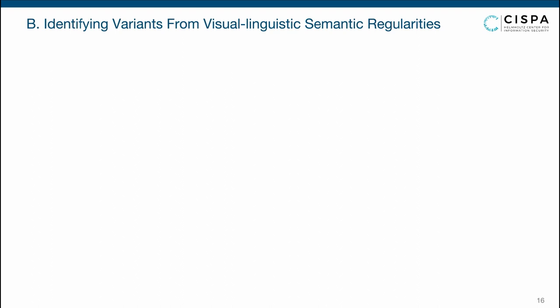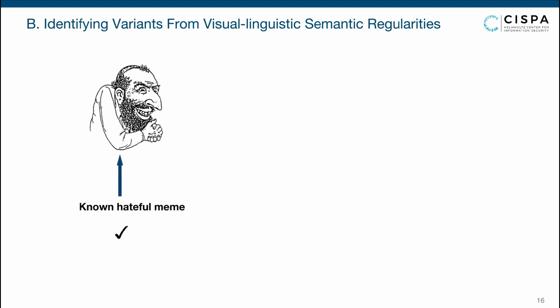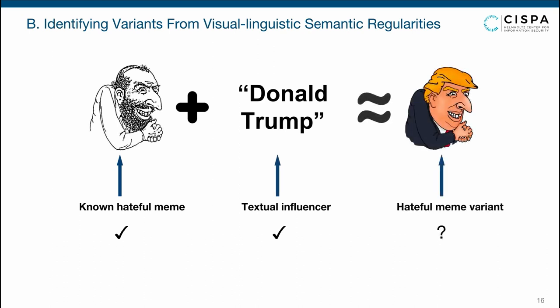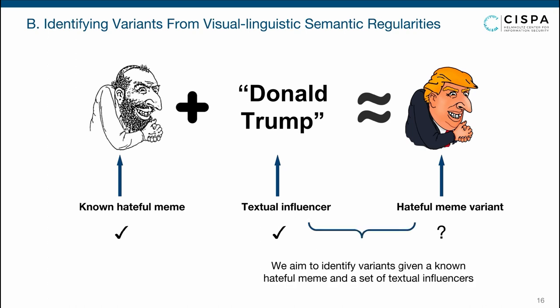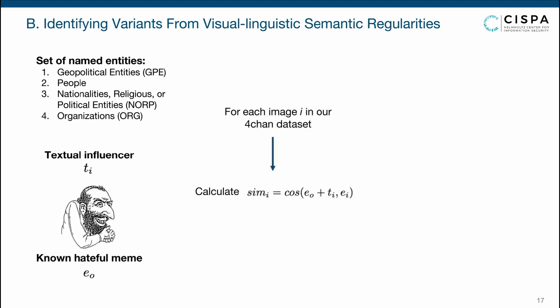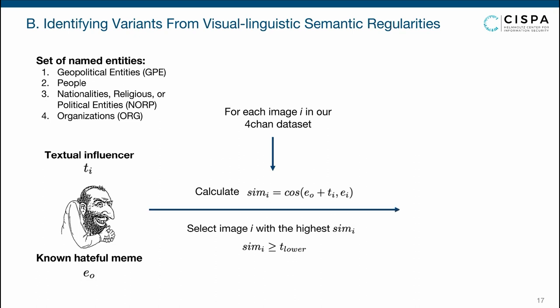What if we want more precise detection? For example, given the known hateful meme Happy Merchant, can we find Trump Merchant directly by specifying 'Donald Trump' as a textual influencer? In this scenario, we use visual-linguistic semantic regularities. We first collect a set of named entities from the Fortin dataset from four categories: geopolitical entities, person, nationalities, religions, and organizations. Taking one entity as a textual influencer, we fuse the text embedding of this entity with the image embedding of Happy Merchant, then run a similar process as the first pipeline to obtain the identified variant.